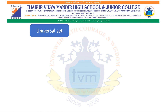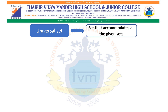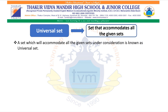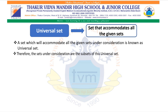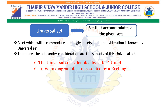Let us see the Universal Set. What is a Universal Set? A set that accommodates all the given sets under consideration is known as a Universal Set. The universal set is denoted by the letter U, and in a Venn diagram it is represented by a rectangle.